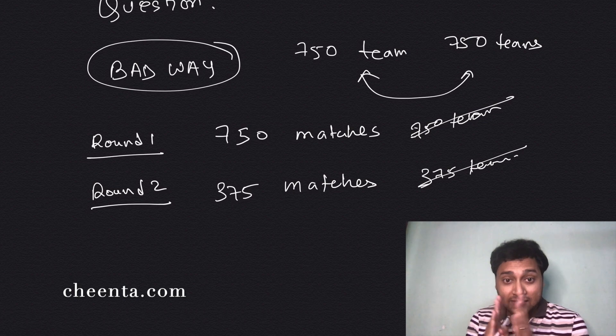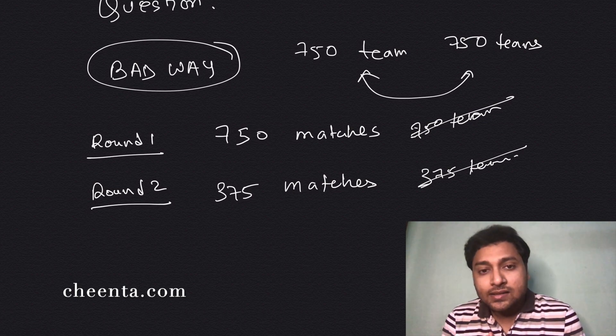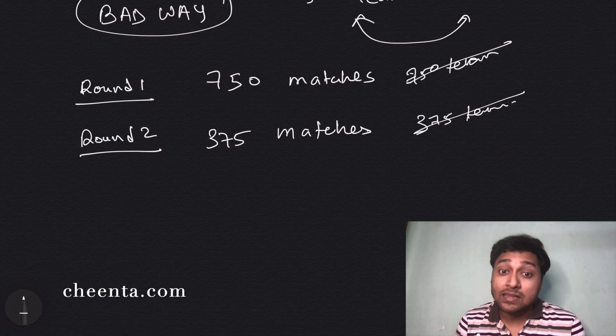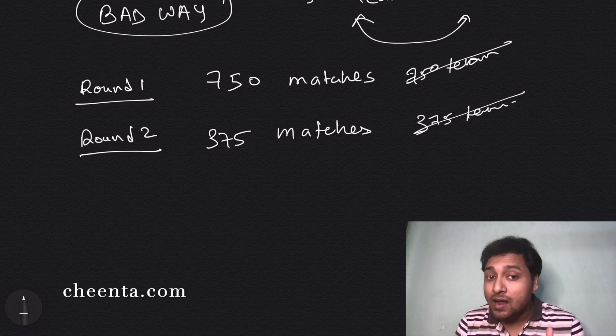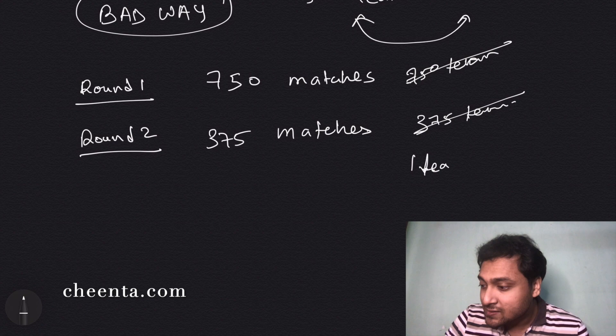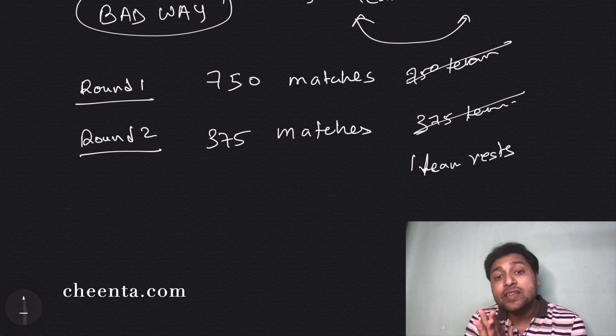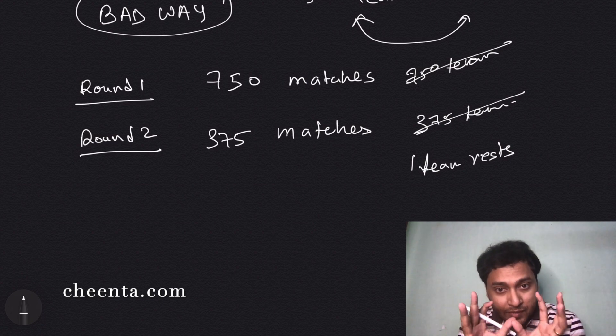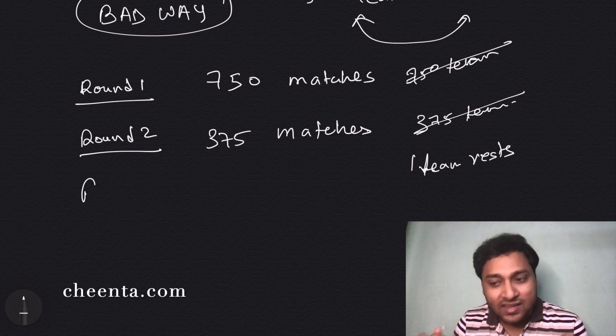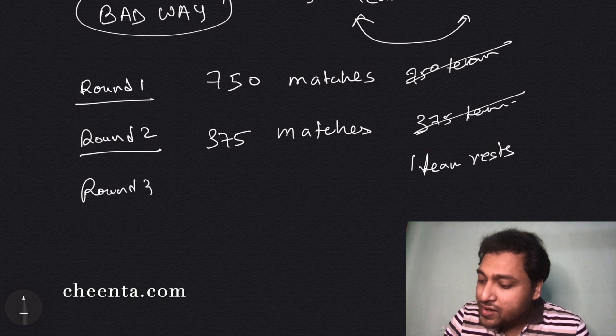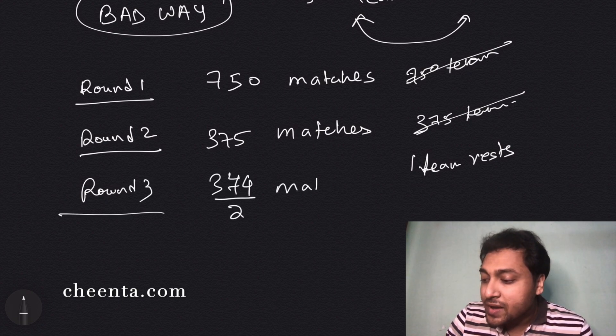Now 375 teams remain. We face a dilemma because we cannot divide 375 by two, so maybe we make up a rule that the best performing team in round two gets to rest. One team rests and the remaining 374 teams divide into two parts and play matches again.